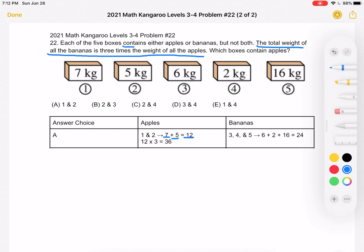We know that the boxes either contain apples or bananas. So if 1 and 2 contain apples, then 3, 4, and 5 contain bananas. We would have box 3, which has 6 bananas, box 4, which has 2, box 5, which has 16, for a total of 24 bananas.